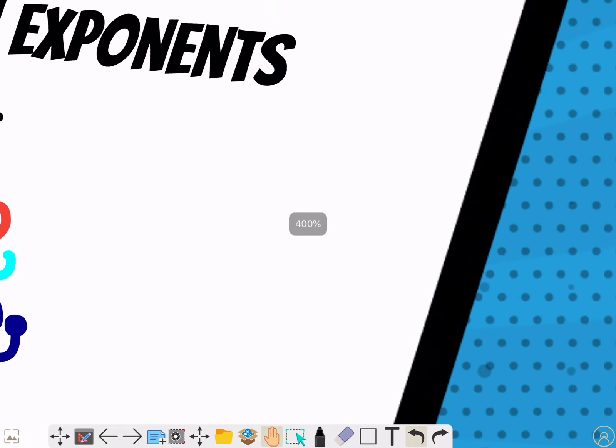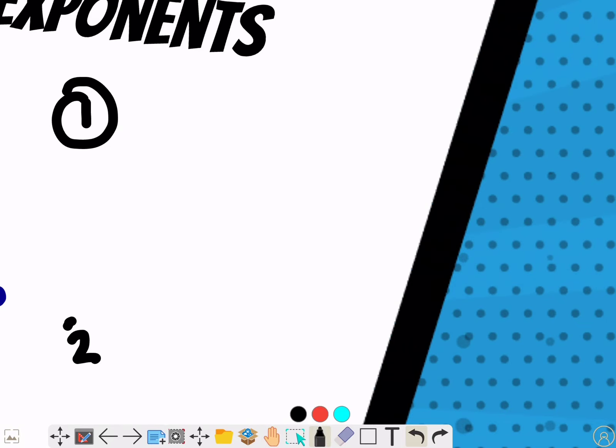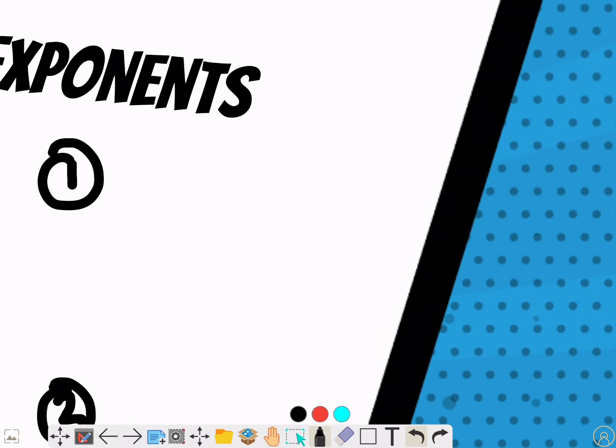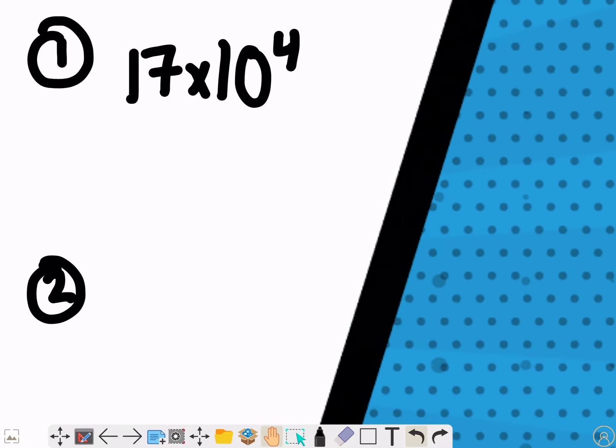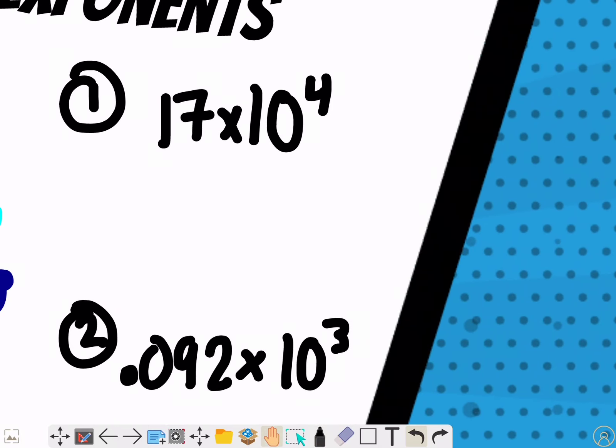We'll do two more example problems. Question one: seventeen times ten to the fourth. Question two: point zero nine two times ten to the third. If you want to pause this video and try to work it out, that's completely fine. If not, you can just listen along.